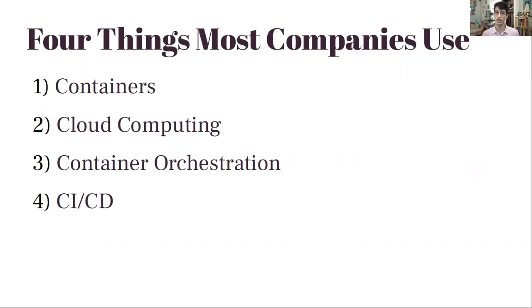There are four things that we're going to cover today. There's a lot more than this to know in real life, but four things that are the fundamentals of where things have been going recently. One is going to be containers - you may have gone to another talk about Docker, we're going to talk about that again. Two, we're going to talk about cloud computing. Three, we are going to talk about container orchestration. And four, we're going to talk about CI/CD - continuous integration or continuous deployment - which is about how we automate a lot of this process and make sure that we're shipping software that doesn't break and is high quality.